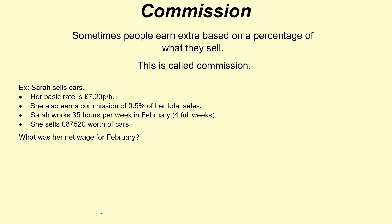This is a bit more complicated. Sarah sells cars. Her basic rate is £7.20 per hour — that's what she gets paid regardless, just for being there and doing her job. She also earns a commission of 0.5% of her total sales. Sarah works 35 hours per week in February, which we'll take to be four full weeks. She sells £87,520 worth of cars. What was her gross wage for February?